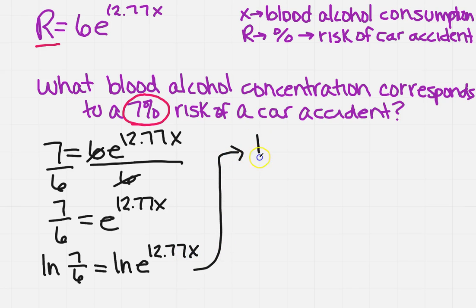So on the left I can't simplify anything, I've got ln of 7 sixths equals now the ln and the e, remember those are opposites so they cancel each other out and once they do that all we're left with is the exponent 12.77x.